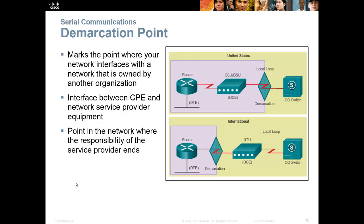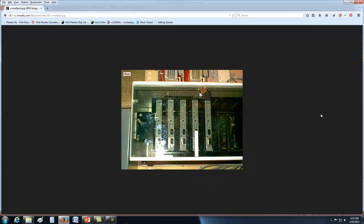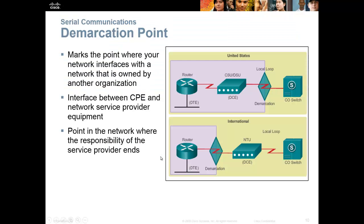The demarcation point is the last piece of equipment that's provider-owned. It's typically a smart jack — basically a big NIC card for T1s mounted in a locked box so people can't mess with it. On the bottom there's an RJ45. You plug your Ethernet cable into that RJ45 and then into your router — that's how you connect to your T1. When your T1 goes down and you call AT&T, the tech will unplug you from the smart jack, plug in test equipment, and test the line from the demarc all the way back to the central office.